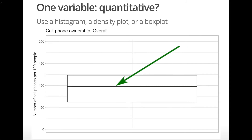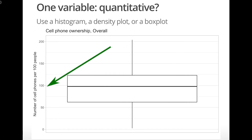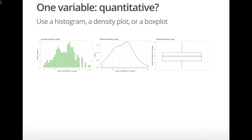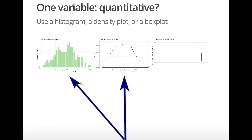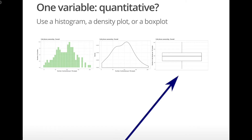From this box plot, we see the median is at 100 cell phones per 100 people. This suggests that in at least half of the countries, people on average own at least one cell phone. This slide shows all three graph types for a single quantitative variable: the histogram, density plot, and box plot. All three are appropriate choices for showing the distribution of a quantitative variable. The histogram and density plot show the shape of the distribution very clearly, whereas the box plot helps us focus on the key features of the distribution.